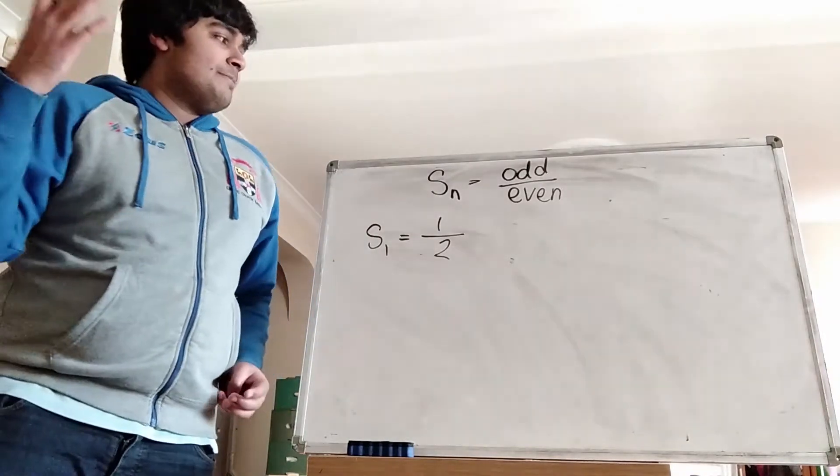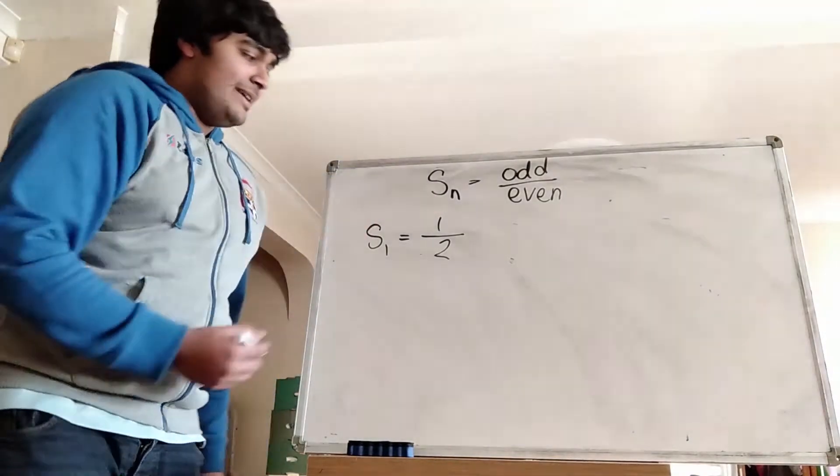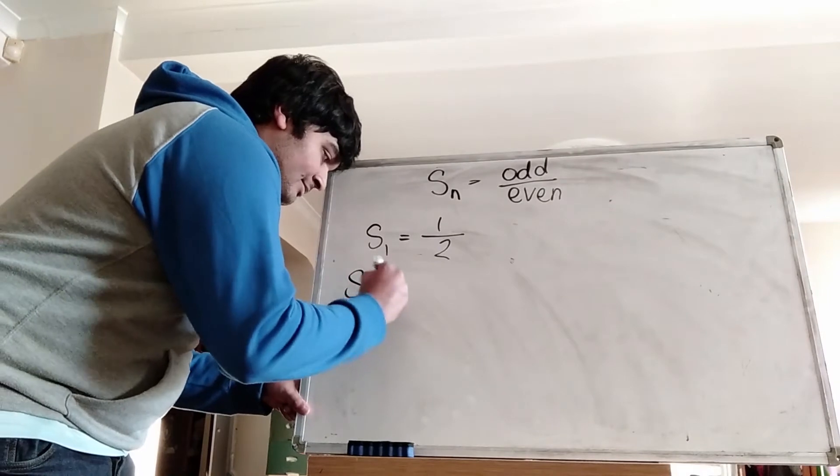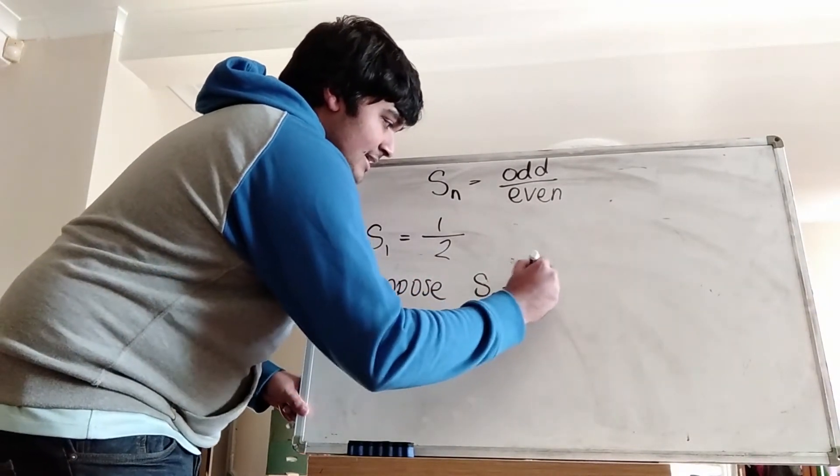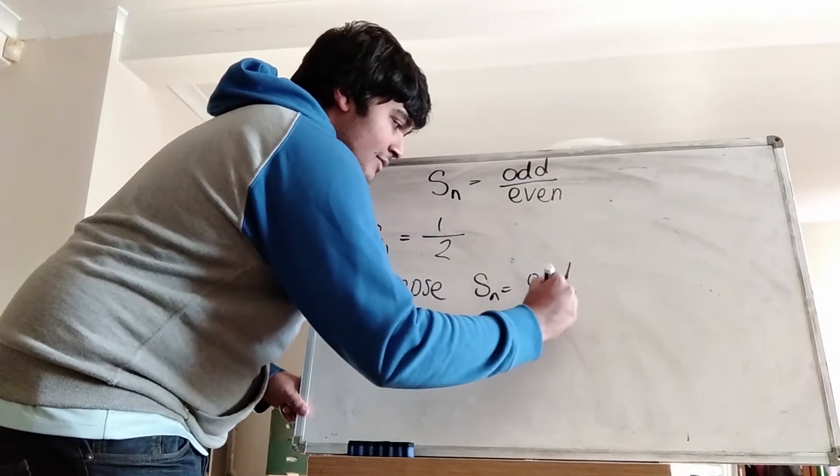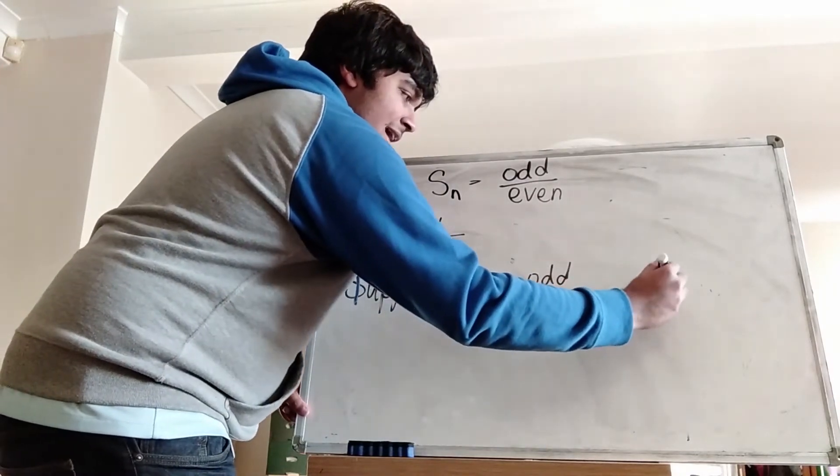Now let's suppose that Sn is of this form here. So suppose Sn is of the form odd over even, and this is for n at least 1.